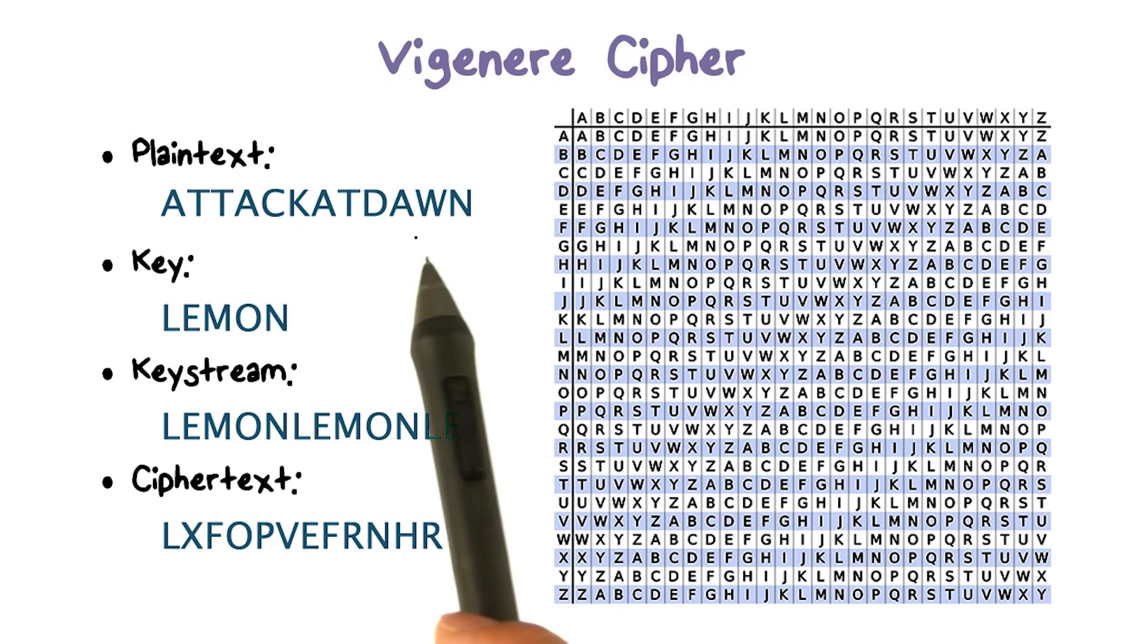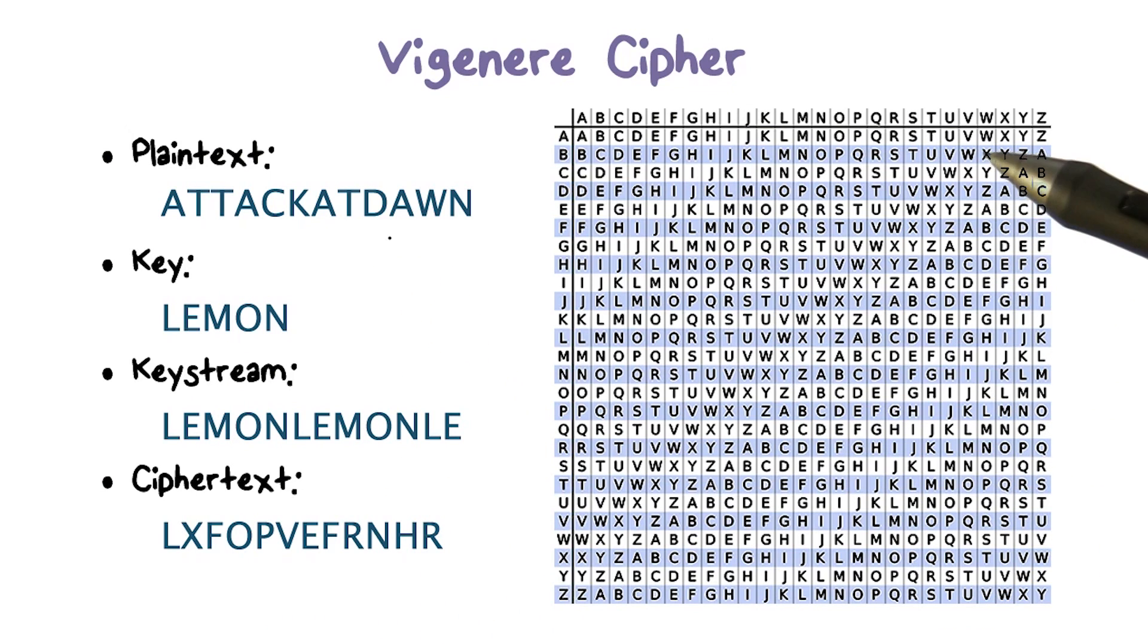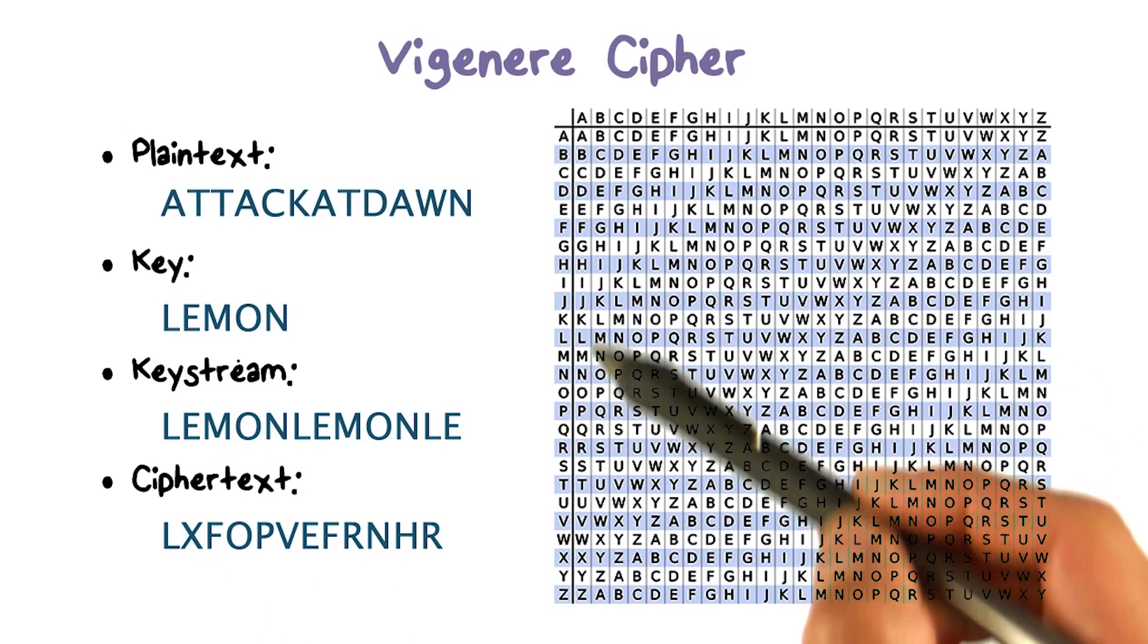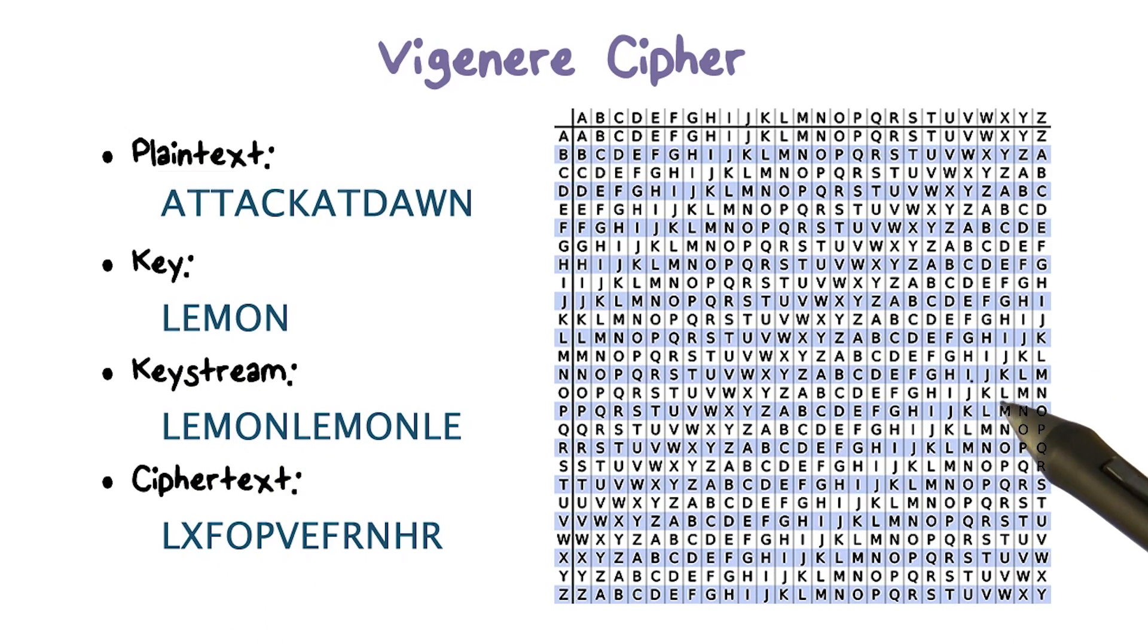Here we encrypt the plaintext by processing one letter at a time across the columns. We use the letters in a key to tell us which row to look at the mapping.